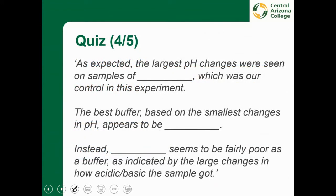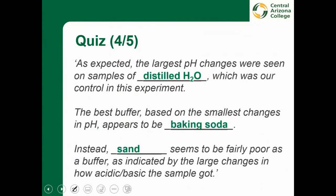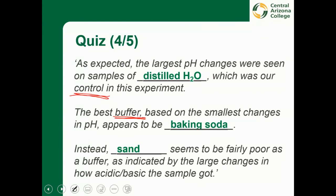This relates to a question from your lab quiz. The distilled water served as a control in this experiment. We found that baking soda made a good buffer, whereas sand was a poor buffer and did not make much of a difference.